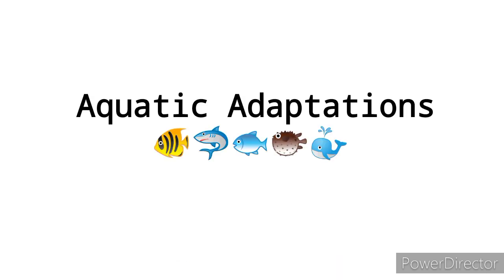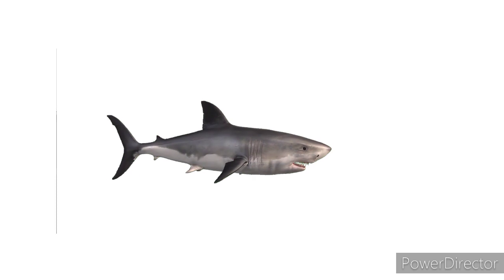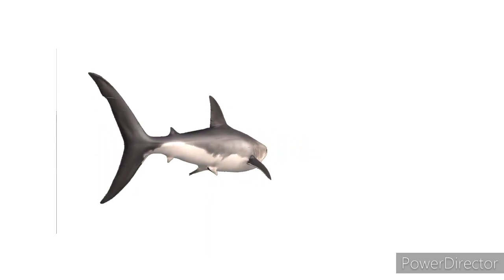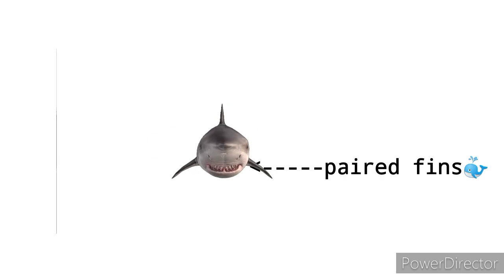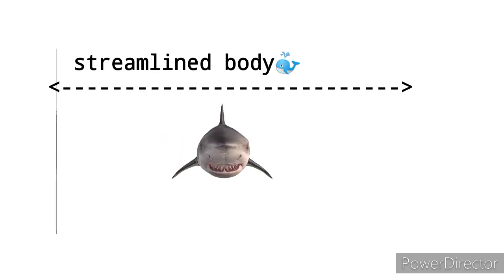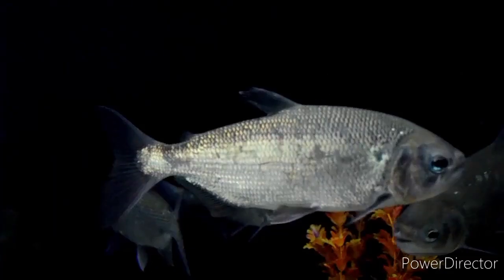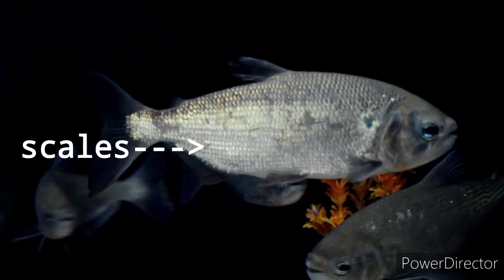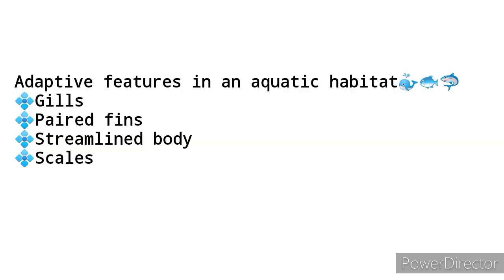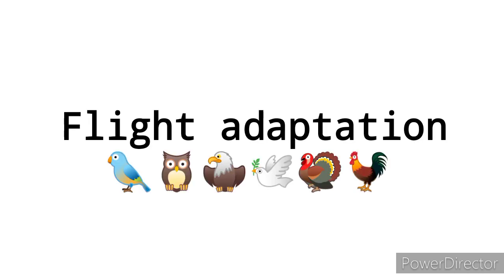Now let's look at some examples of adaptations. Fishes are able to survive in marine as well as freshwater habitats due to the following features: they breathe through gills, which help them take dissolved oxygen from the water; they move through water using paired fins on either side of their body; their streamlined body helps them move easily through water; and they have scales on their body placed in an overlapping fashion, protecting their soft body. These features enable them to live in an aquatic habitat.